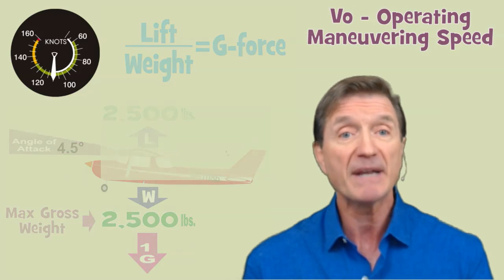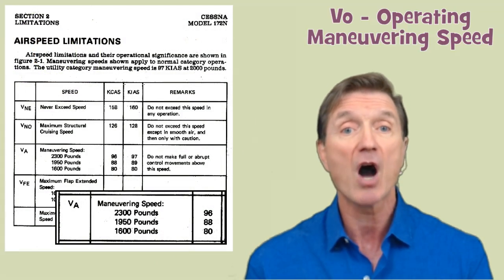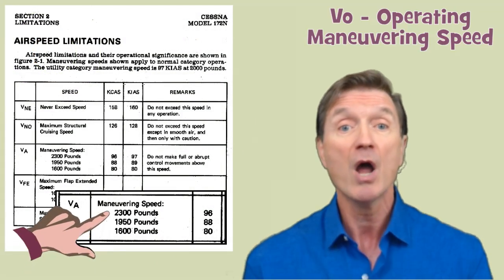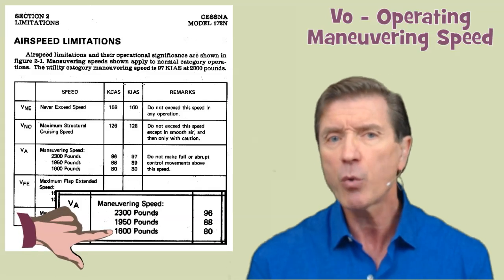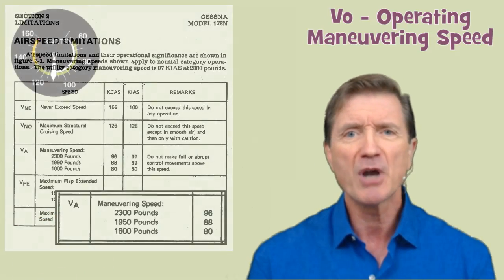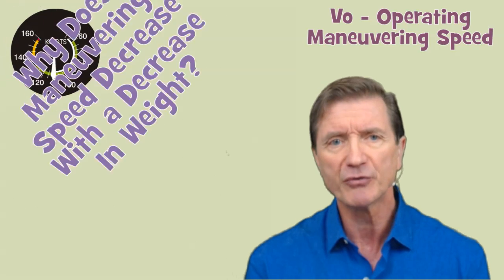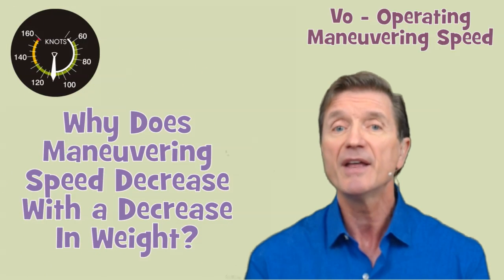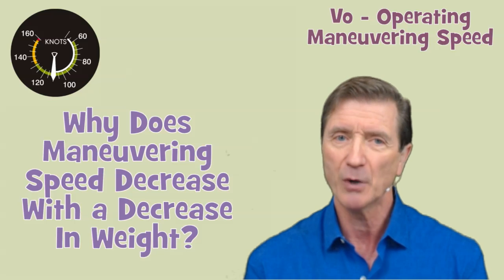In fact, many pilot operating handbooks show three different operational maneuvering speeds for weights less than gross weight. Now the question is — or at least it should be on your mind — why does the operational maneuvering speed decrease as the airplane's weight decreases?